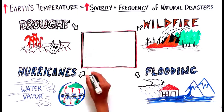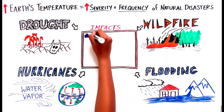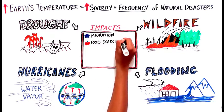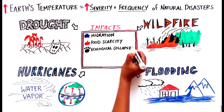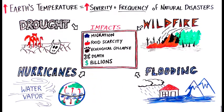All of these disasters have profound impacts on humans and animals, including forced migration, food scarcity, ecological collapse, and even death. Additionally, repairing the damage caused by these disasters costs the world billions of dollars annually.